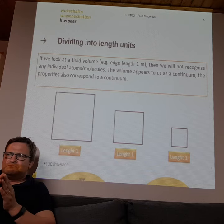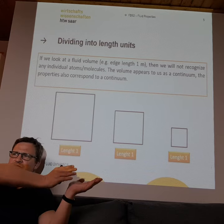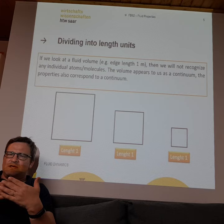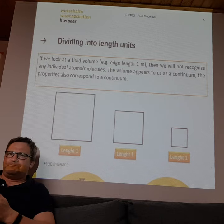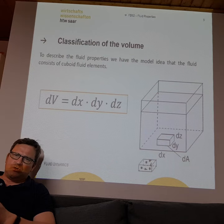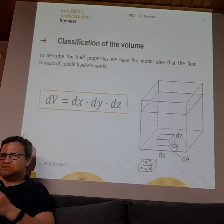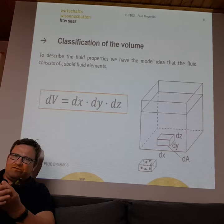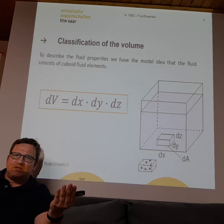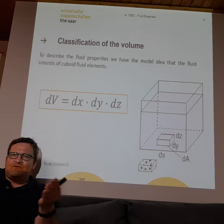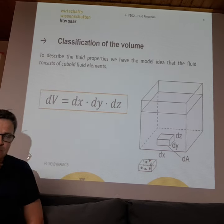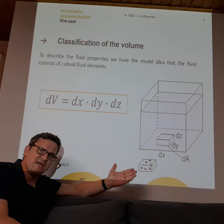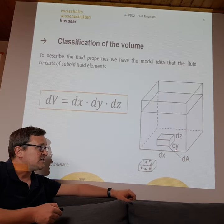In continuum mechanics we have to look at separate length scales. We can have a big continuum, a smaller continuum, or a really small continuum, but we always describe the whole behavior for one continuum as if it is everywhere the same. The most important quantity in fluid dynamics is volume. For example, fluid in your aquarium is a block of water with a certain volume. You need the length in the x direction for your fish tank or aquarium.